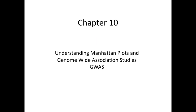Chapter 10: Understanding Manhattan Plots and Genome-Wide Association Studies. The most common method to identify candidate genes that contribute to a complex trait in humans is to use a genome-wide association study, abbreviated to GWAS, as described in Chapter 10. Let's look at an example to see how the data from a genome-wide association study are displayed and interpreted.